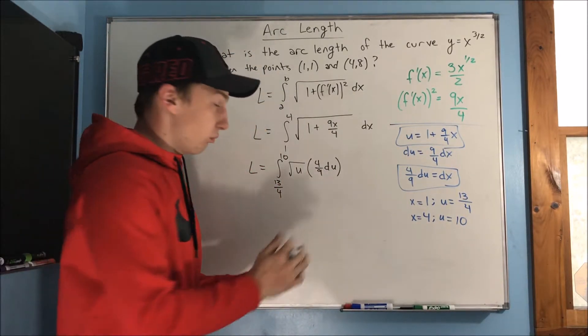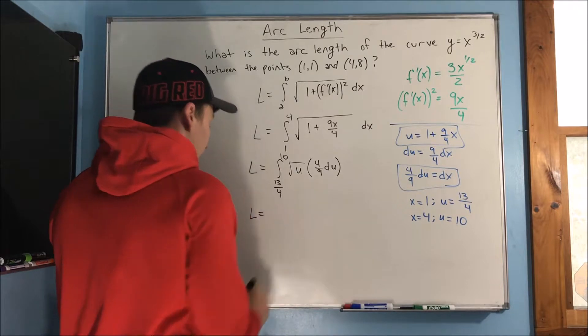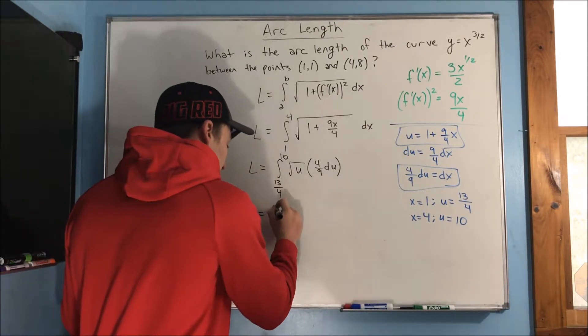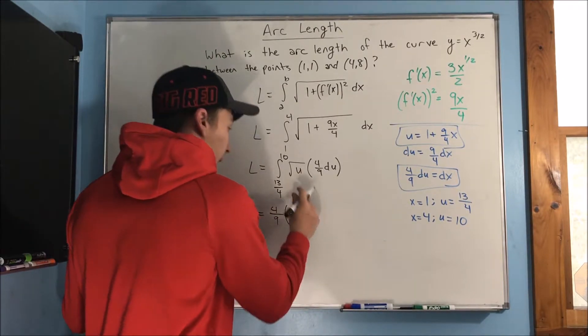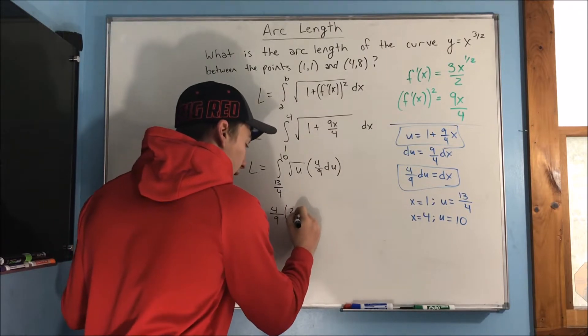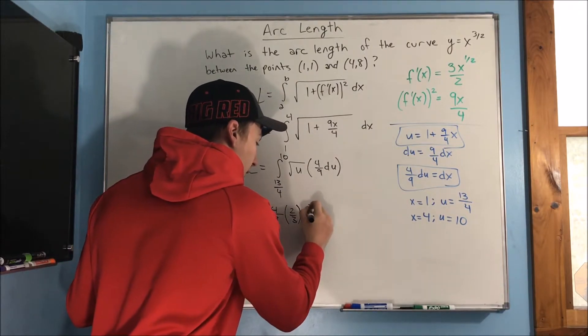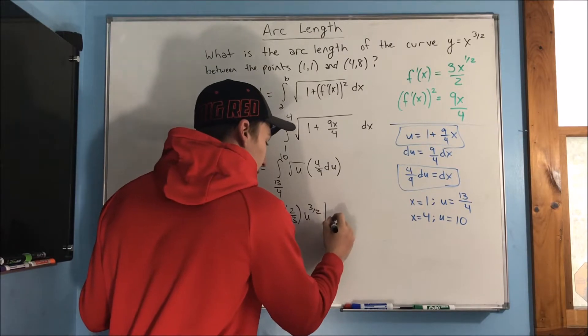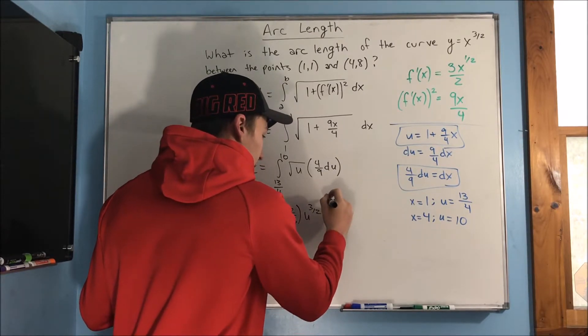Okay, so integrating here, we're going to get the arc length is equal to 4 ninths times, well this is going to be 2 thirds u to the 3 halves, evaluated from 13 over 4 to 10.